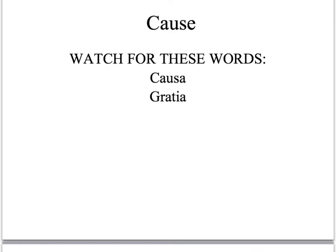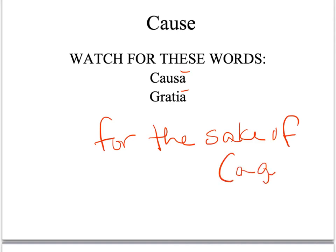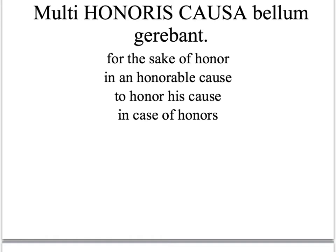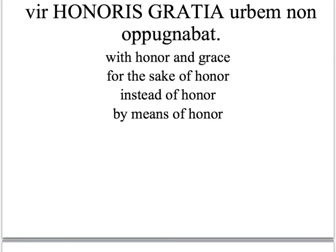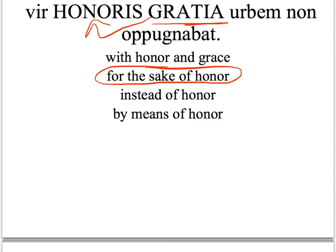Another commonly forgotten use of the ablative is the ablative of cause. You'll see it when you have causa or gratia in the ablative case, usually translated as 'for the sake of' plus a genitive. For example: 'Multi honoris causa bellum gerebant' — causa in the ablative plus the genitive, meaning 'for the sake of honor.' The same pattern applies with gratia: ablative plus a genitive, once again giving us 'for the sake of honor.'